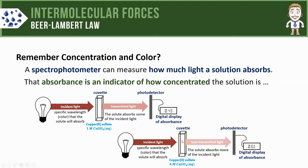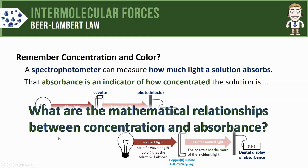In this video, we'll look at some of the mathematical relationships that exist between concentration and absorbance. In particular, the equation that summarizes these relationships is called the Beer-Lambert Law. It relates the light absorbed by